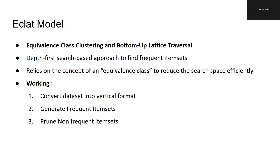The three main steps in Eclat are: first, convert the dataset into a vertical format where each item is associated with a list of transaction IDs; next, generate frequent item sets by intersecting the transaction ID lists; finally, prune item sets that do not meet the minimum support threshold set by us. This method is particularly effective because it reduces the problem size at each step.